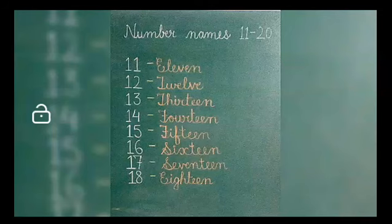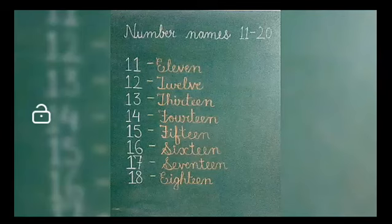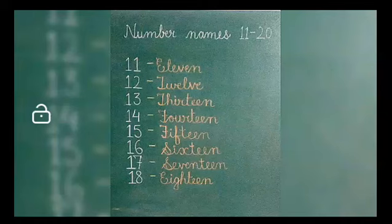Kids, in the spelling of eighteen, first we have to write EIGHT, spelling of eight, and then we will not write TEEN. We will just write E, E and N. Because T is already in the spelling of eight. So the spelling is E, I, G, H, T, EIGHT. E, E, N, IN. EIGHTEEN.